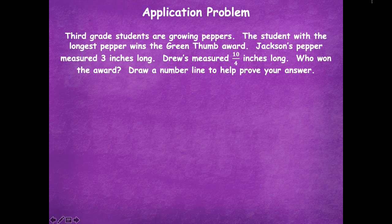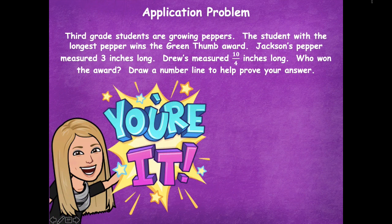You're going to pause the video, draw a number line, and then find where three inches would be and where ten-fourths would be on your number line. Your number line is going to go from zero to three inches — that's the farthest distance. Then you need to divide each inch into fourths, because your fraction is ten-fourths.